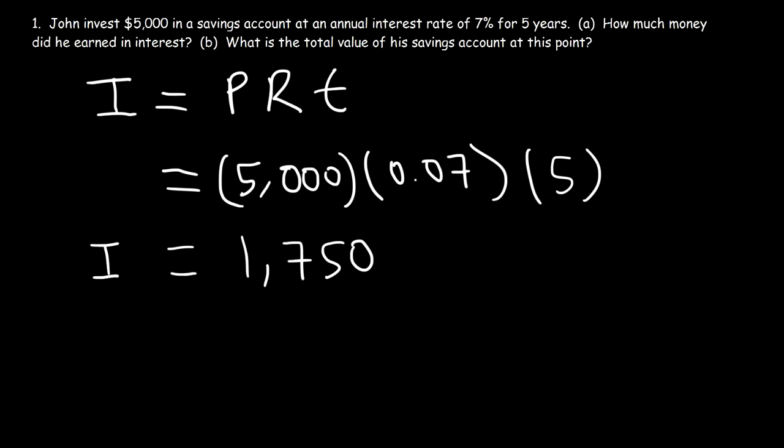Now part B, what is the total value of his savings account at this point? So keep in mind, he initially put in $5,000 and his account was credited with $1,750 in interest. So his total account value at this point is $6,750.